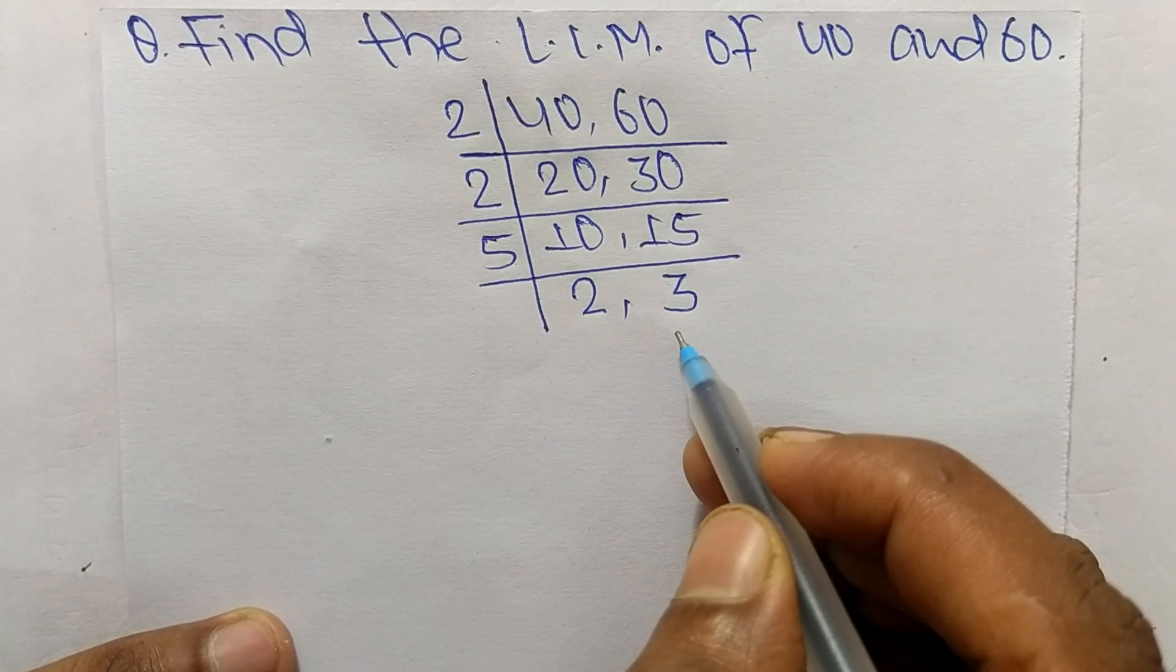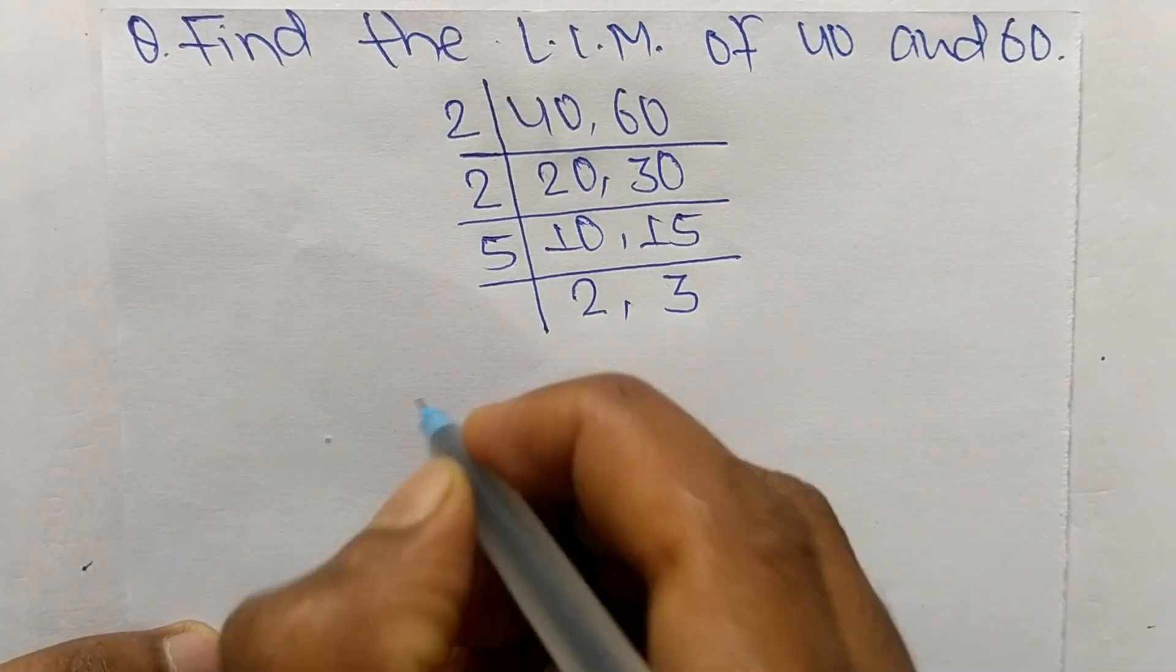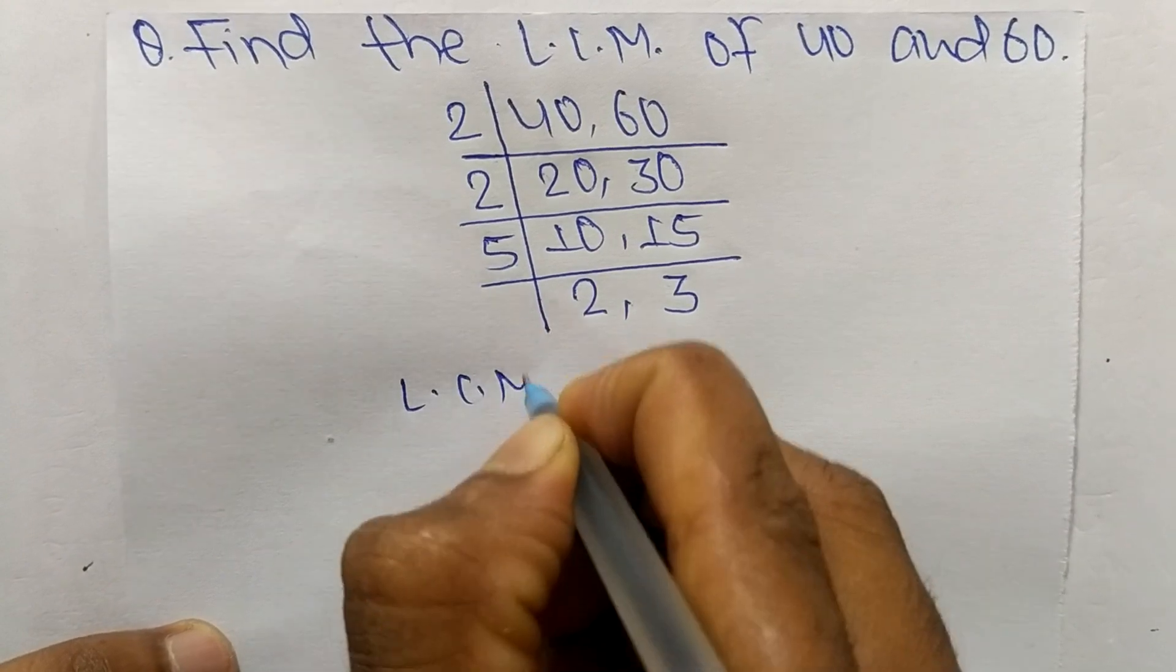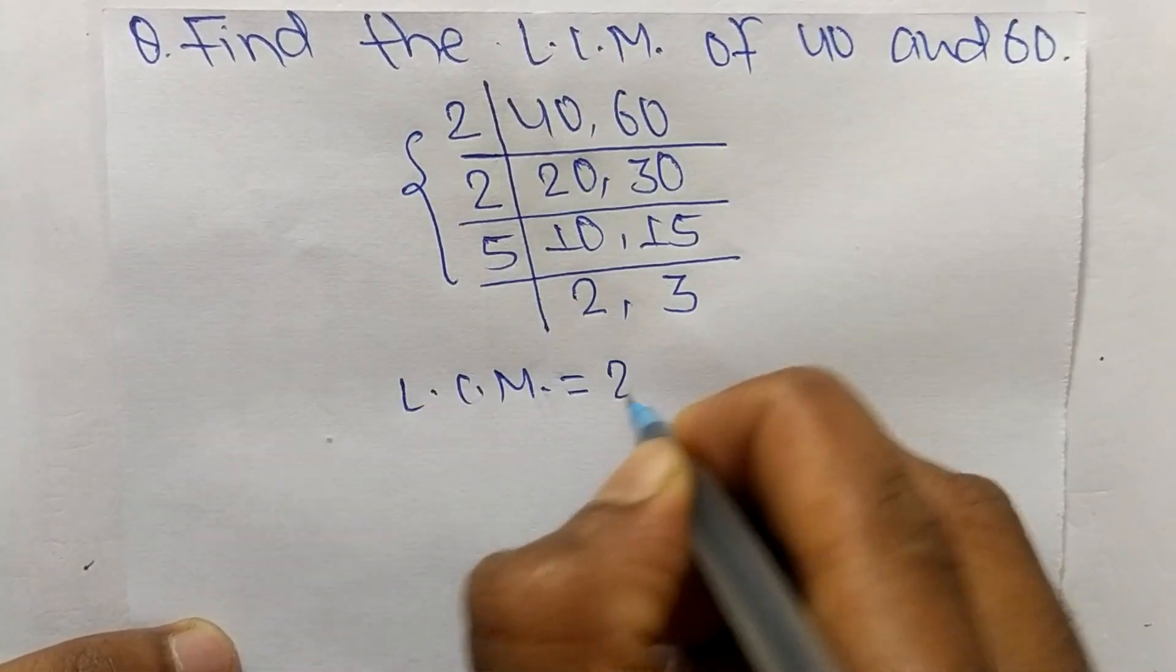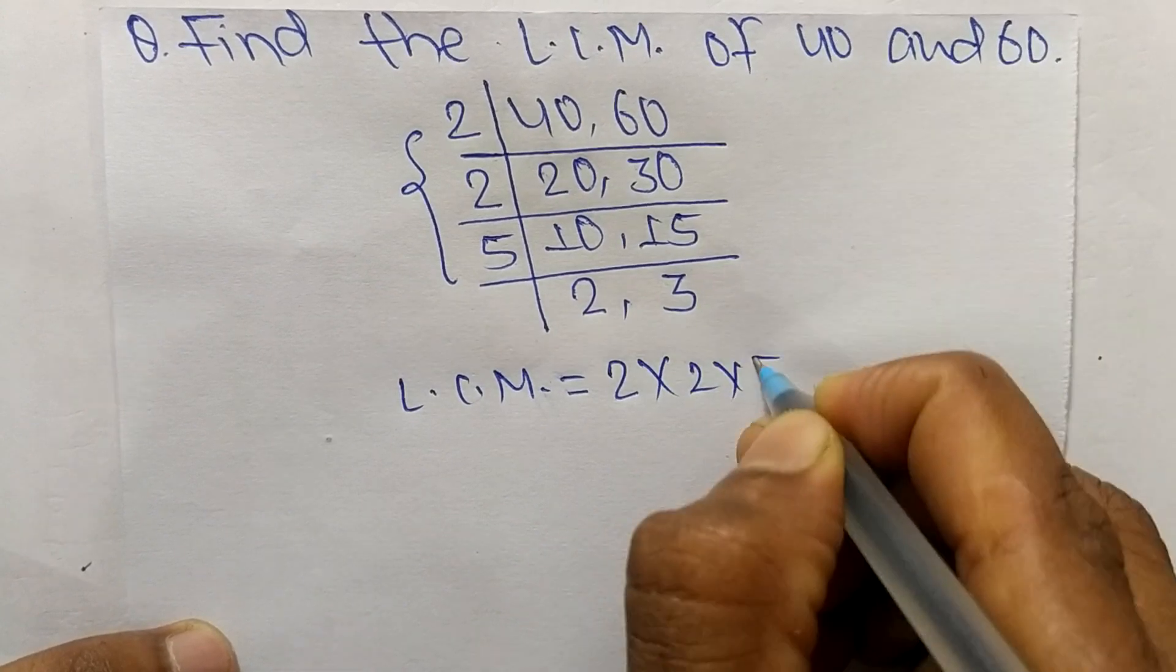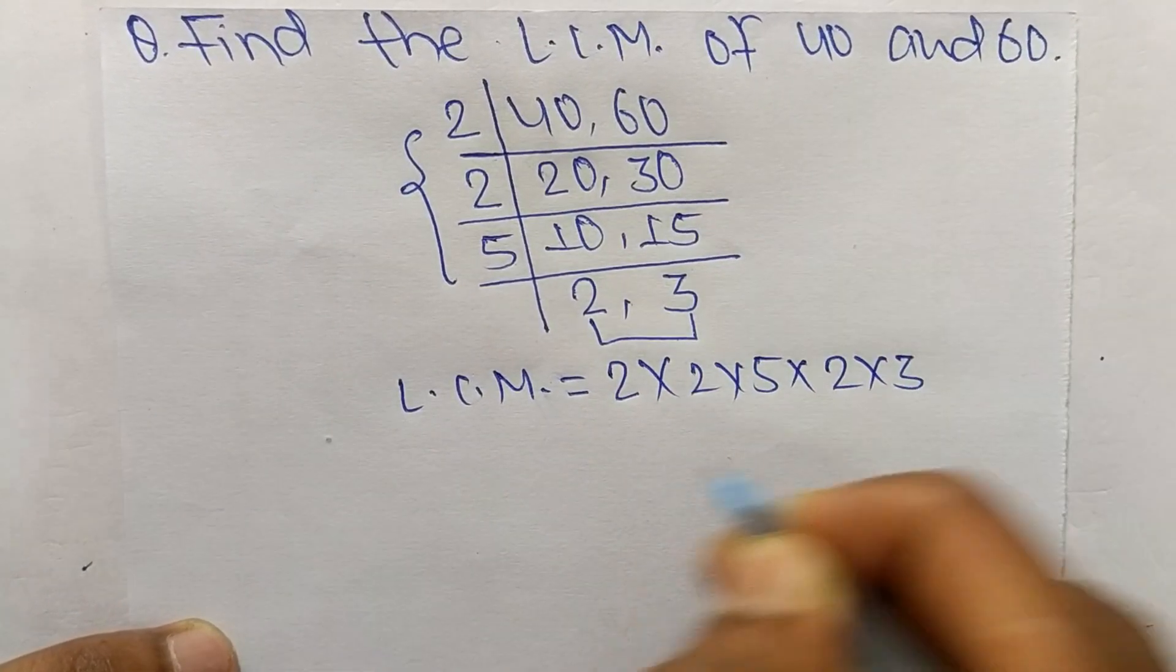So the LCM is equal to 2 times 2 times 5 from this part, and from this part we have 2 and 3.